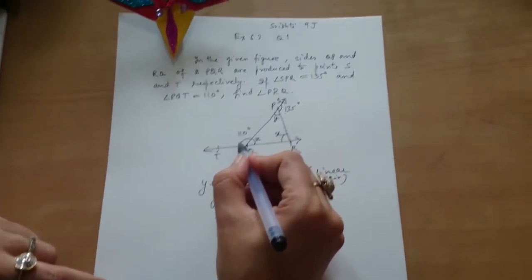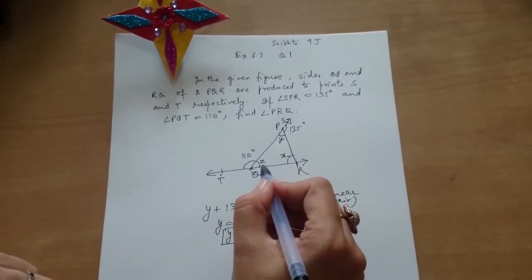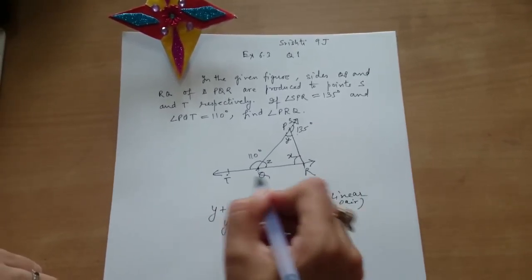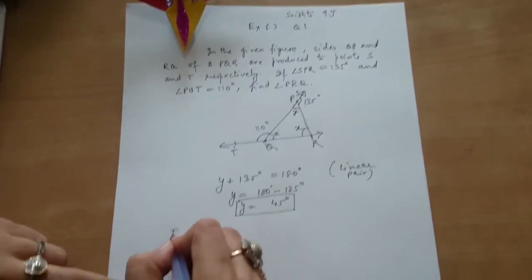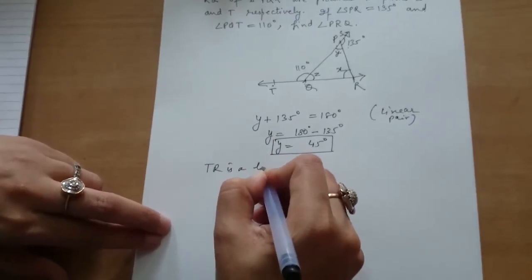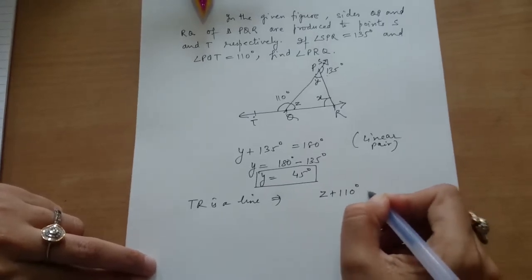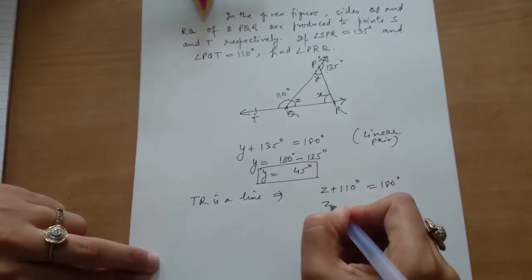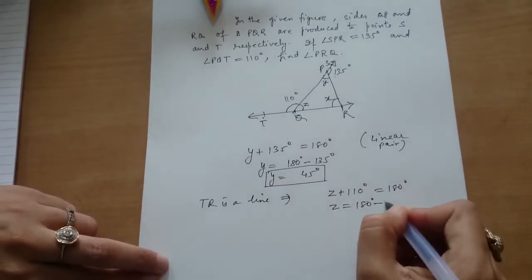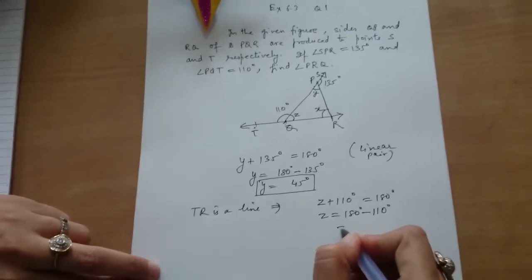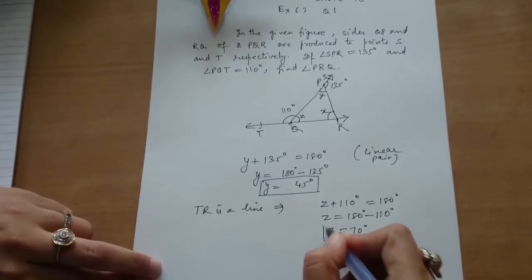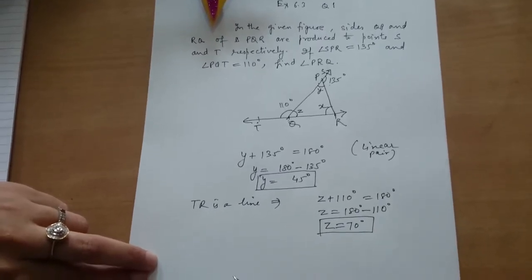Now see here. This is 110 degrees. And this is Z. Here TR is a line. So Z plus 110 degrees equals 180. So what will be Z? 180 minus 110 degrees, that is 70 degrees. So you have the value of Z also.